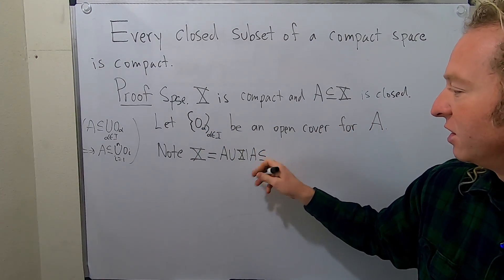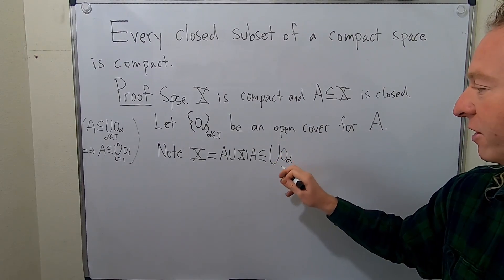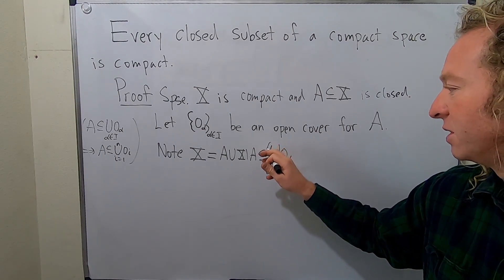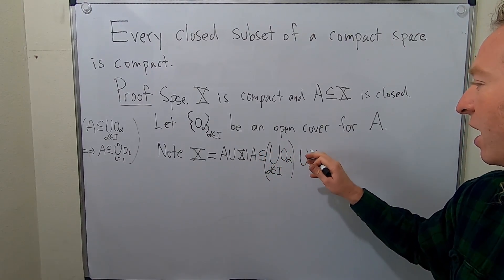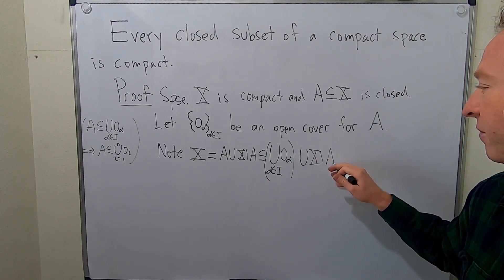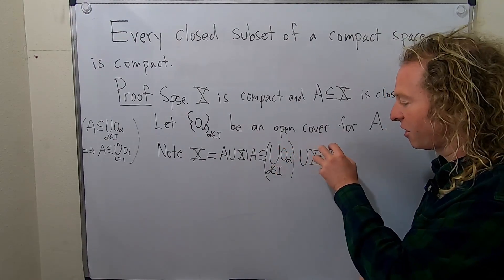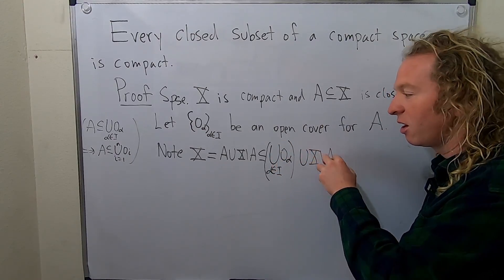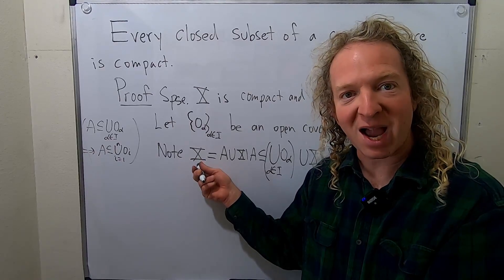So this is, this guy here, A, is contained in the union of these O_α's as α runs through some index set I. So I'm going to put this in parentheses for clarity like this, and then union X set minus A. So we have that these elements here together with this set here. So all of these O_α's together with this create an open cover for X.